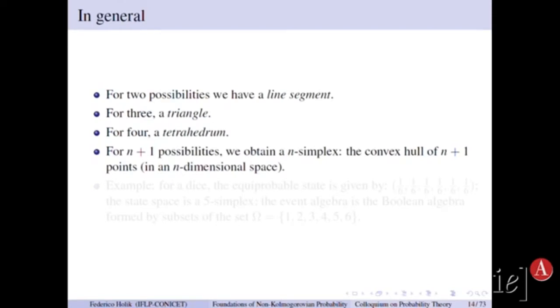For n plus one possibilities, we obtain a very precise geometrical object, which is an n-simplex, which is the convex hull of n plus one points in an n-dimensional space. So classical probabilities, this is the first conclusion, have a very definite shape when you represent them geometrically.